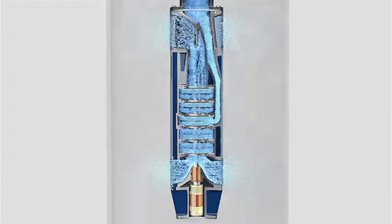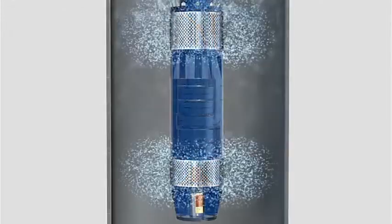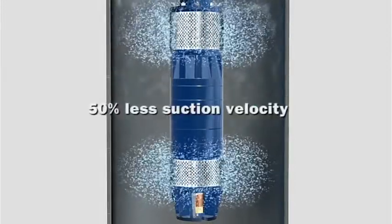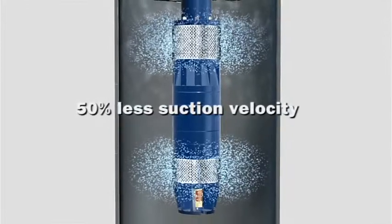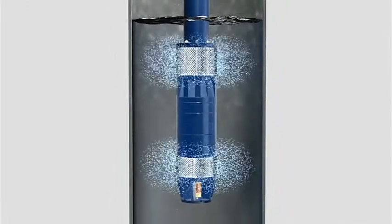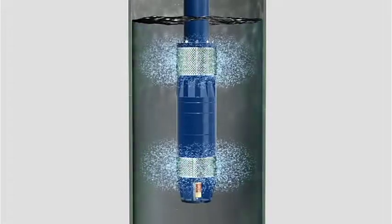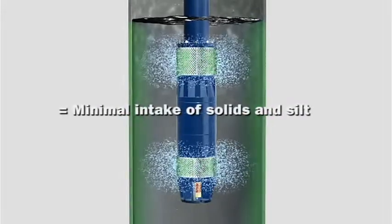The division of work between the two pumps provides full compensation of axial thrust, as well as halving the suction velocity outside the pump. This protects the well walls around the intake openings and reduces the intake of abrasive substances.